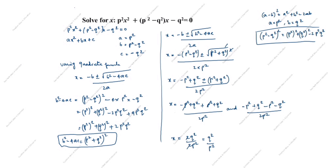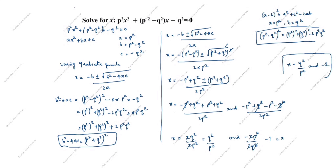Taking the negative case: x = (-p² + q² - p² - q²) / 2p². Here +q² and -q² cancel, giving -2p² / 2p². The 2 and p² cancel, so x = -1. Therefore, the two solutions are x = q²/p² and x = -1. Thanks for watching this video.